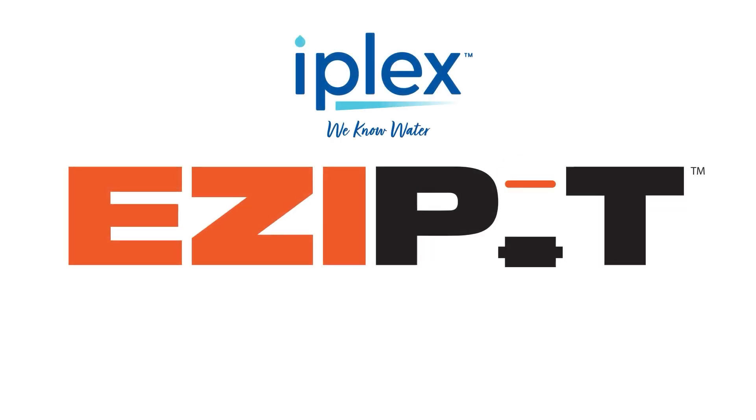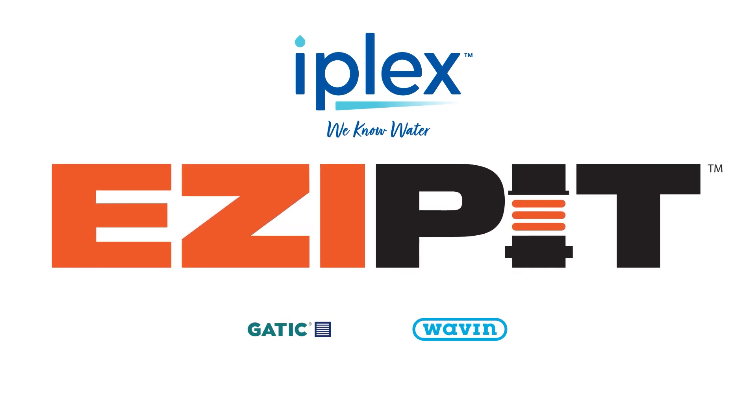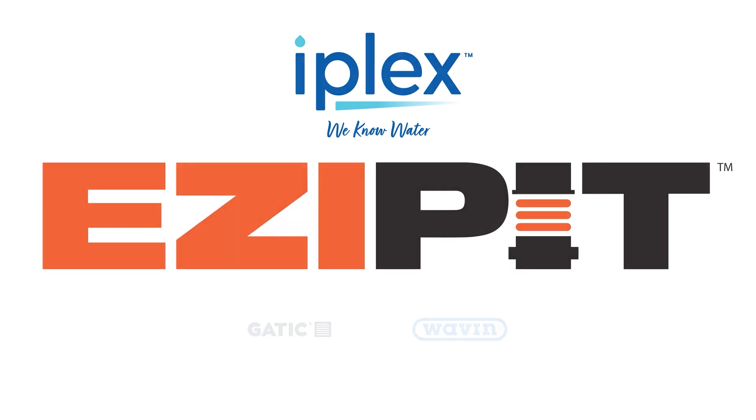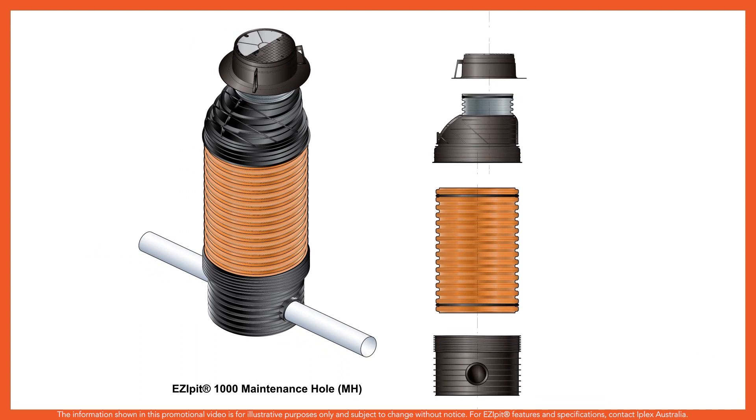The IPLEX EasyPit is an innovative gravity sewer solution for water authorities and contractors on every level. Now with three sizes including the new large EasyPit 1000 maintenance hole, this modular polypropylene solution solves multiple challenges.